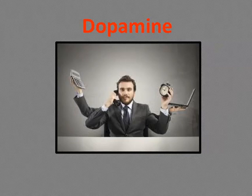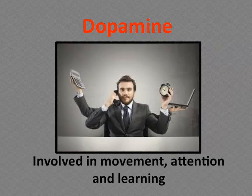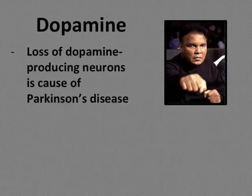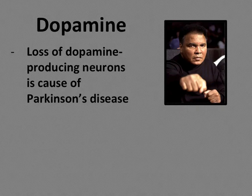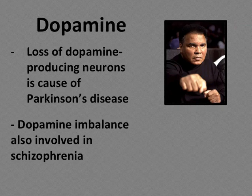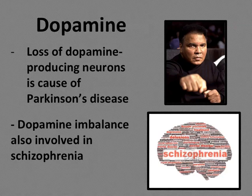Dopamine is a neurotransmitter associated with movement, attention, and learning. A loss of dopamine-producing neurons can cause Parkinson's disease, with symptoms including difficulty starting and stopping voluntary movements, tremors when the body is resting, stooped posture, a very rigid body, and poor balance. A dopamine imbalance — specifically, too much dopamine — can be associated with schizophrenia.